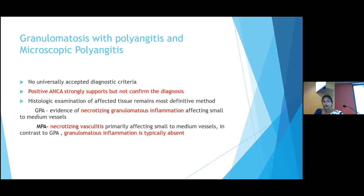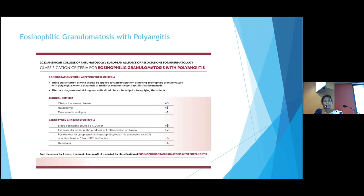GPA and MPA more or less share their diagnostic approach, and there are no universally accepted diagnostic criteria for either. On biopsy, GPA shows necrotizing granulomatous inflammation affecting small to medium-sized vessels. In MPA, necrotizing vasculitis primarily affecting small vessels is seen, but granulomatous inflammation is typically absent. This biopsy distinction helps differentiate the two entities. It should be noted these are classification criteria, not diagnostic criteria, but they can guide the clinician toward a diagnosis.